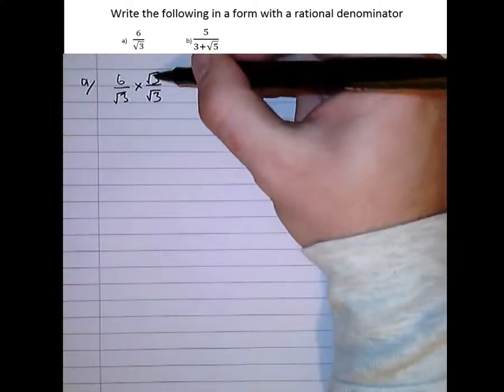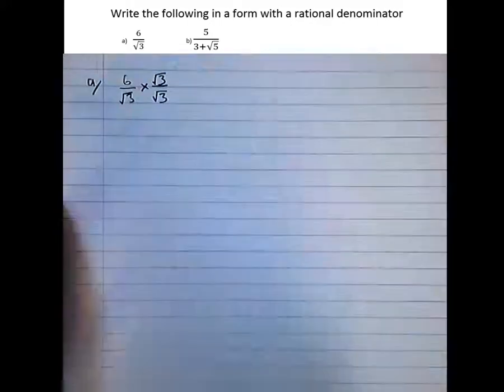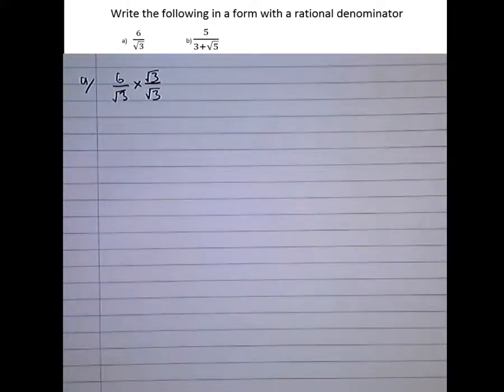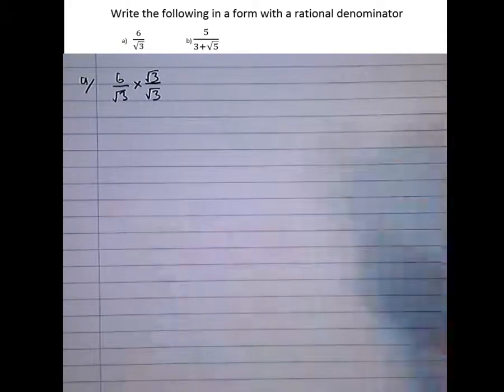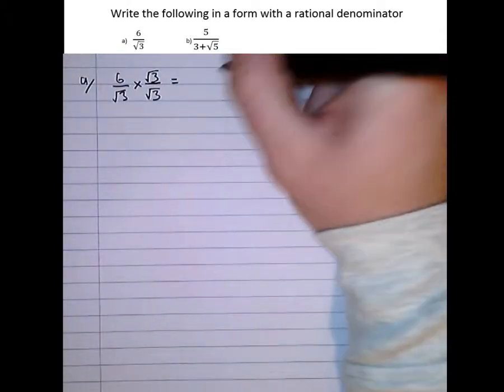So here, we're multiplying by root 3 divided by root 3. That's just 1. A number divided by itself is 1. So all this is doing is multiplying by 1, but in a really clever way that allows us to represent the surd in a different form, but still keeping the same value.